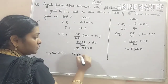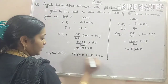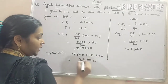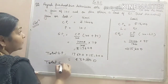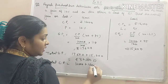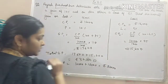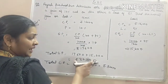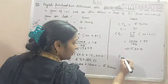Total SP will be 17,600 plus 15,200, which equals Rs. 30,800. And total CP will be 16,000 plus 16,000, which equals Rs. 32,000. You can see that CP is greater than SP, so there will be a loss. Find the loss percentage.